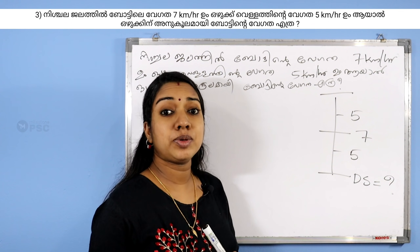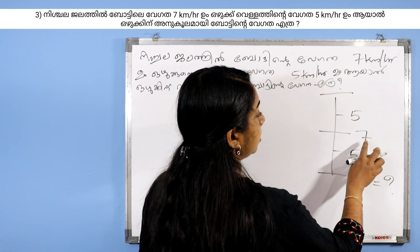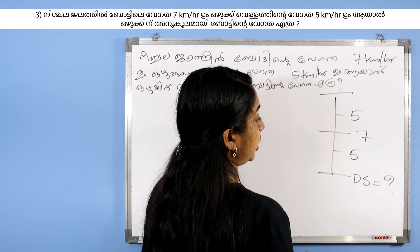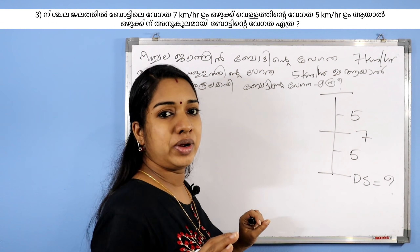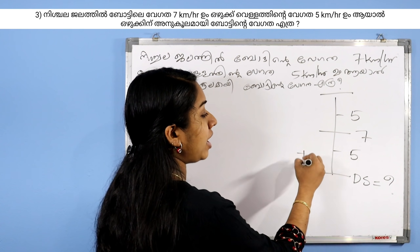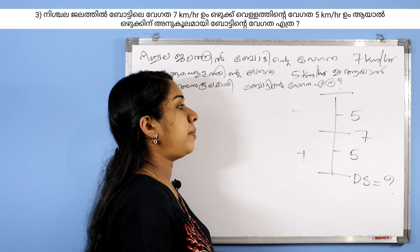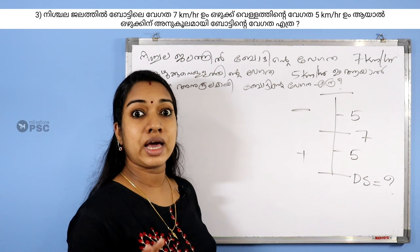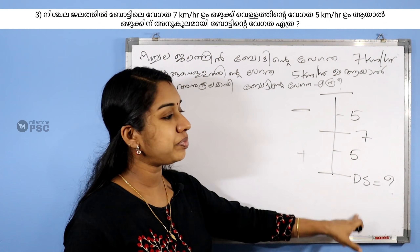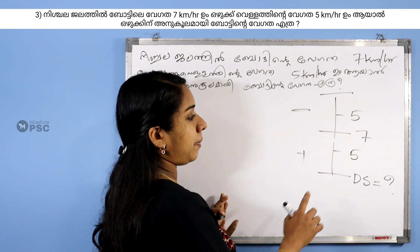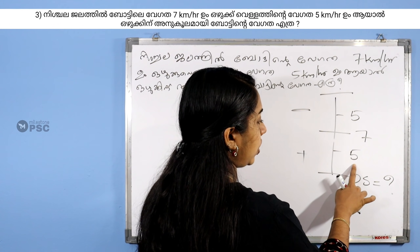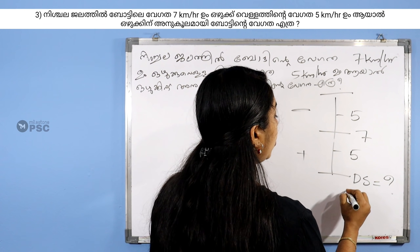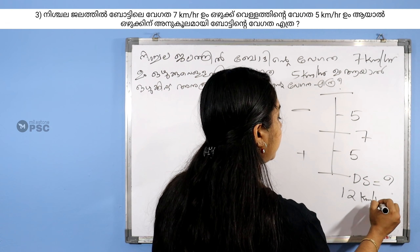Upstream speed and downstream speed — these are on opposite sides. The negative speed is minus, and the positive response is added. This is 7. Under the downstream speed, 7 divided by 2 gives 7/2 km per hour as our answer. If you don't have the upstream speed, it's minus 8.